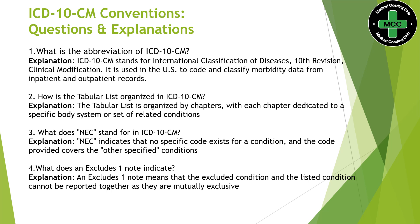First, we check the code from the alphabetic index. Then, whatever code we get from the alphabetic index, we refer to it in the tabular list. In the tabular list, we have the coding instructions — we can see Excludes 1 notes and any 'use additional' or 'code first' instructions there.